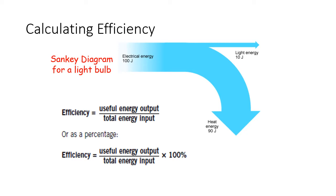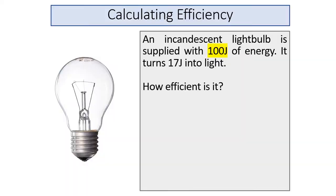The Sankey diagram helps us understand input energy, useful energy, and wasted energy. On the left-hand side, the electrical energy input is 100 joules. On the right-hand side, the top arrow shows light energy of 10 joules — the useful energy — and 90 joules is the wasted energy shown by the downward arrow. The equation for efficiency is: useful energy output divided by total energy input.